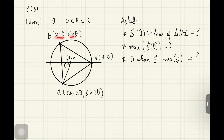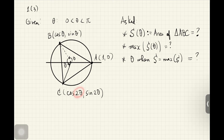Remember that (cosine theta, sine theta) are the coordinates of points on the unit circle, where theta is the central angle. So the angle up to B is theta, and the angle from that ray to C is also theta, so that the total central angle to C is 2 theta.